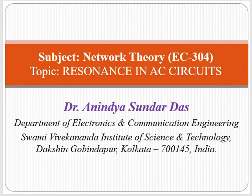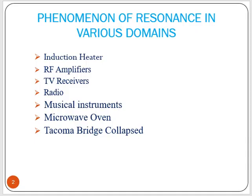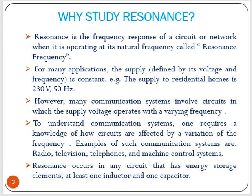Hello everyone, this is lecture number 18 on network theory. Today's topic is resonance in AC circuits. This phenomenon is used in various domains like induction heaters, RF amplifiers, TV receivers, radio, musical instruments, and microwave ovens. There is also a destructive example — the Tacoma Narrows Bridge collapsed in 1940 due to this phenomenon of resonance.